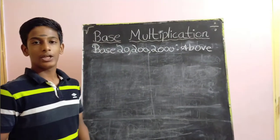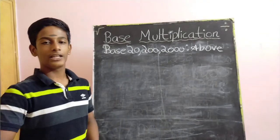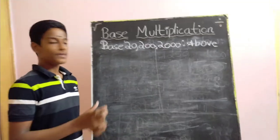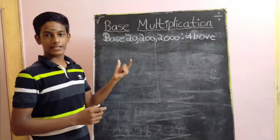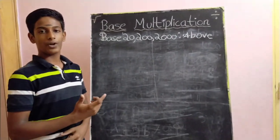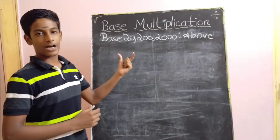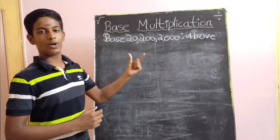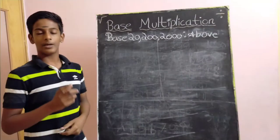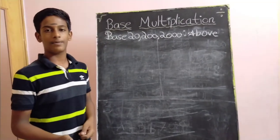Welcome back to our channel, EMT Unanamudi Umtola. In our previous videos, we saw that if the nearest base number is a primary base number, we have to follow base 100, 1000, etc., above, below, or above and below base. What if the nearest base number is a secondary base number?